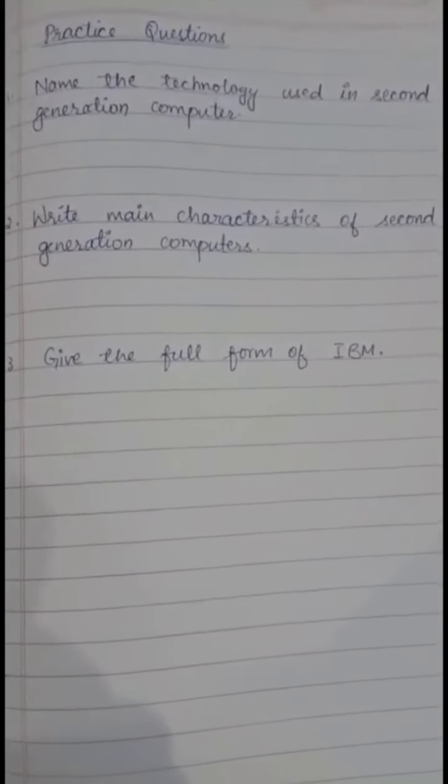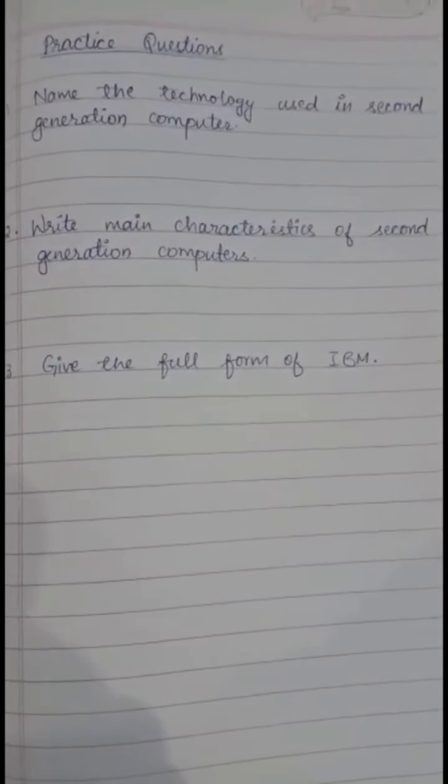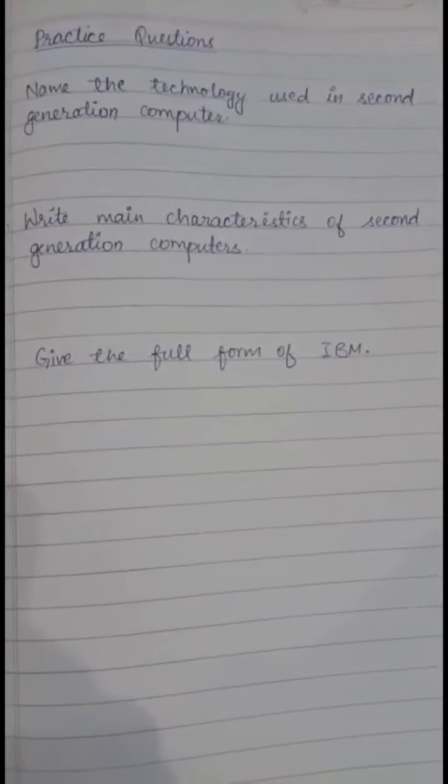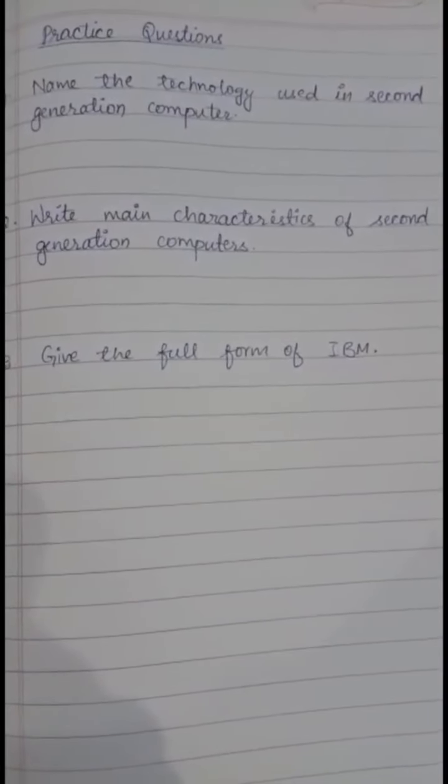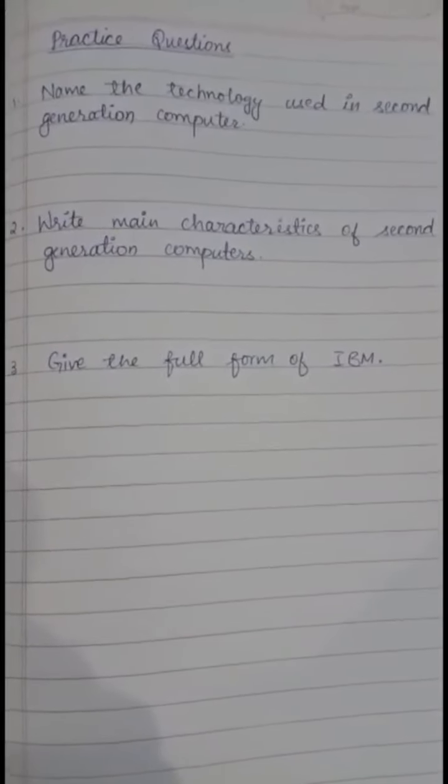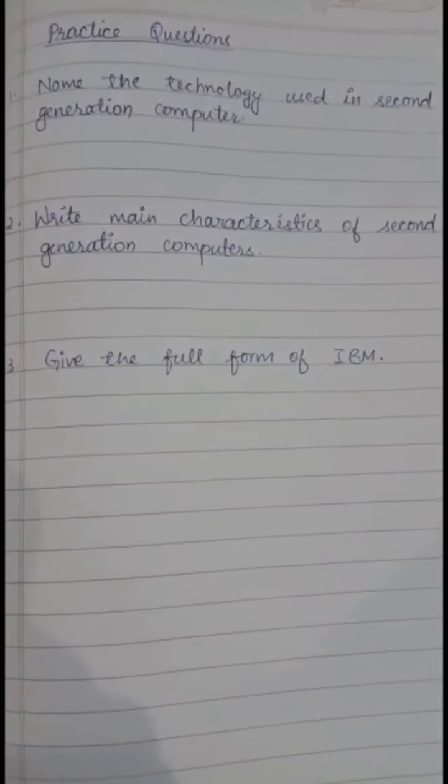So you have to write the characteristics: what was the technology used, what memory was used, whether the speed was fast or slower. That way you have to write this answer. And question number three: Give the full form of IBM.